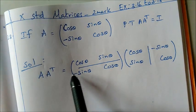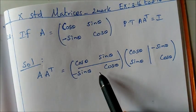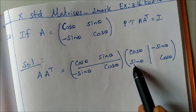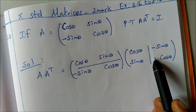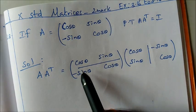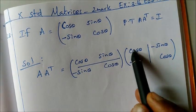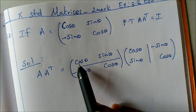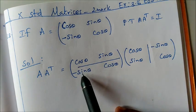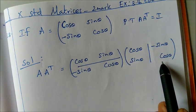So AA transpose equals A matrix into A transpose matrix. To find the transpose matrix, we swap rows and columns — rows become columns and columns become rows.